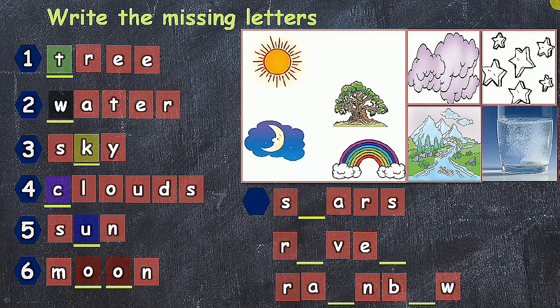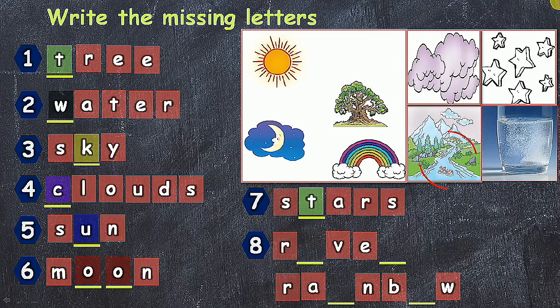In seventh one, that is stars. In the seventh one, T is the missing letter. S-T-A-R-S, stars. And then next one, that is river. I and R are the missing letters. R-I-V-E-R, river.